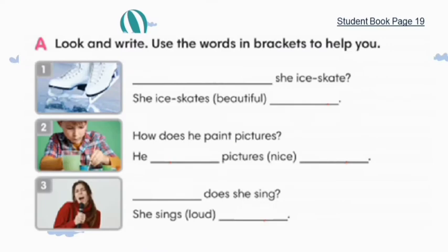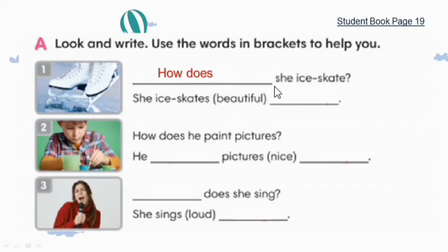Kita langsung ke contoh pada student book halaman 19, poin A: Look and write. Use the word in brackets to help you. Kita lihat bersama-sama dan tuliskan kata yang tepat untuk melengkapi dialog tersebut. Yang pertama ada question mark, berarti bentuknya pertanyaan mengenai adverb of manner. How does she ice skate? Kenapa kita pakai 'does'? Karena subjeknya adalah 'she'. Maka jawabannya: She ice skates beautifully — kata 'beautiful' yang awalnya adjective ditambahkan -ly menjadi 'beautifully'.